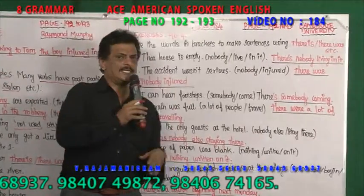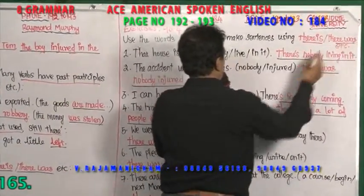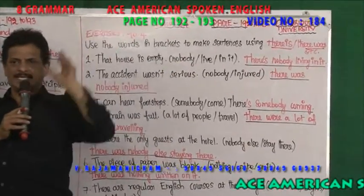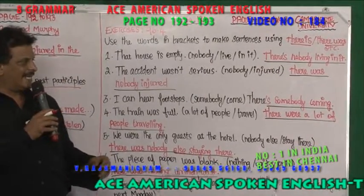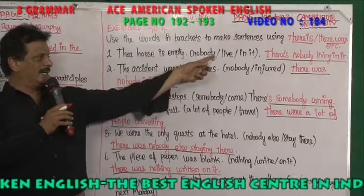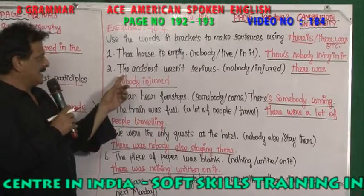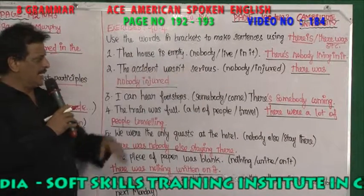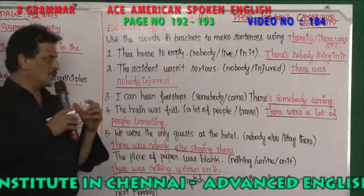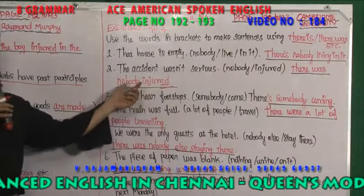Use the words in brackets to make sentences using 'there is' and 'there was.' That house is empty, nobody lives in it — there is nobody living in it. The accident wasn't serious, nobody was injured — there was nobody injured.